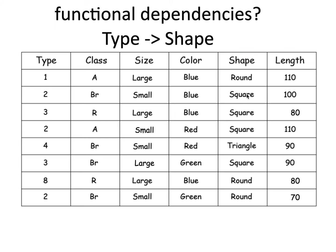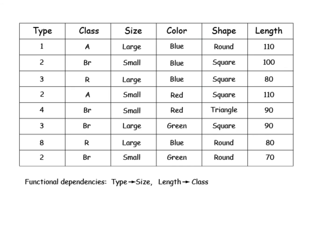For type-to-shape: I check the repeat values. For shape 'square' and 'square' — ok. Then 'round' and no — so shape isn't functionally dependent on type. Basically, you ask yourself: if I know the value in one item, can I say the value in the second item? If there are repeat versions, you ask whether the second item matches across all those repeat versions. The functional dependencies found are: type determines size, and class is dependent on length — so if I know length, I know the value of class.